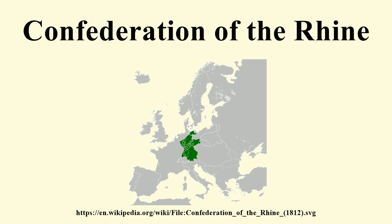The Allies opposing Napoleon dissolved the Confederation of the Rhine on 4 November 1813. After its demise, the only attempt at political coordination in Germany until the creation of the German Confederation on 8 June 1815 was a body called the Central Administration Council. Its president was Heinrich Friedrich Karl Reichsfreiherr vom Stein. It was dissolved on 20 June 1815.